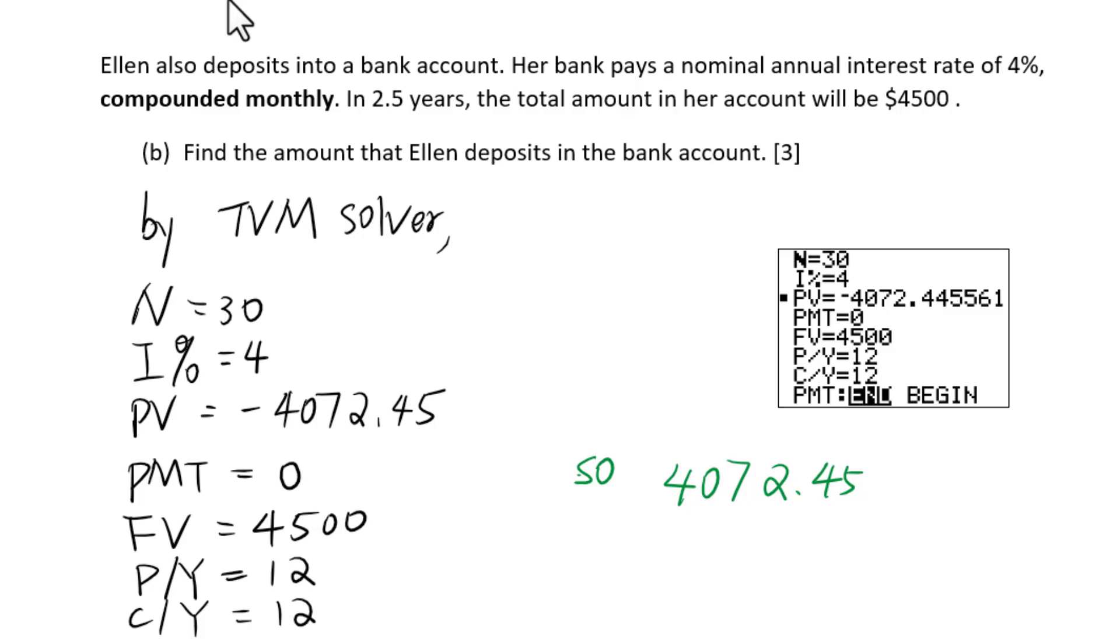$4072.45 is the amount that Ellen deposits in the bank account.